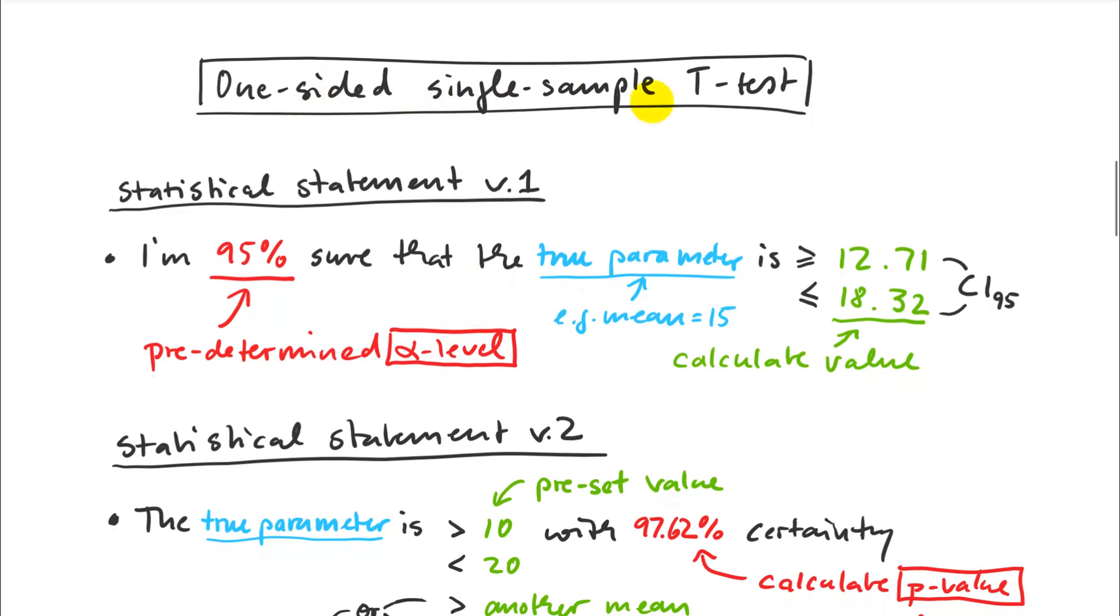To get to the one-sided single-sample t-test, we have to think a bit more about the statements that we make. In the case of the confidence interval, what I was saying was, I'm 95% sure that the true parameter, my mean of 15 that I knew because I generated that in my simulation, is larger than 12.71 or smaller than 18.32. That was correct. The 15s were sitting in between those two values. So this is what I preset. I said I want a 95% confidence interval, and then I calculated those two values here. If you do have such a predetermined probability that you want, that's also called an alpha level.